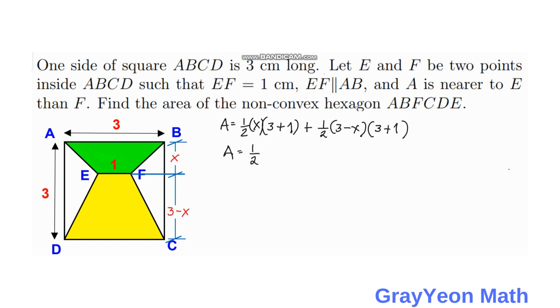We can factor out one half and 3 plus 1, so we have 3 plus 1, and inside we have x plus 3 minus x.